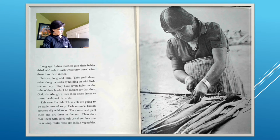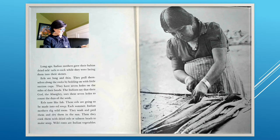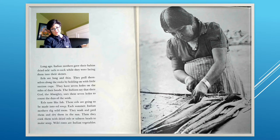Long ago, Indian mothers gave their babies dried eel tails to suck while lacing them into their skeins. Eels are long and thin. They pull themselves along the rocks by holding on with little suction cups. They have seven holes on the sides of their heads. The Indians say that their God, the Almighty, uses those seven holes to count the days of the week. These eels are going to be made into eel soup. Each summer, Indian mothers dig wild roots, wash and peel them, and dry them in the sun, then cook them with dried eels or salmon heads to make soup.